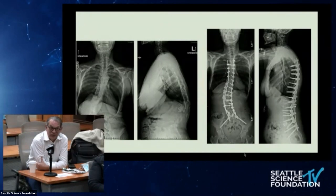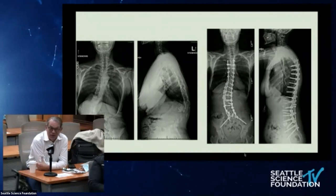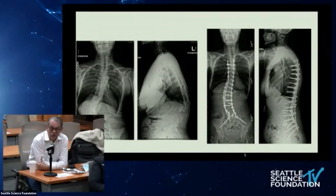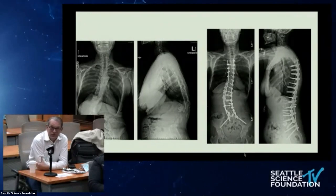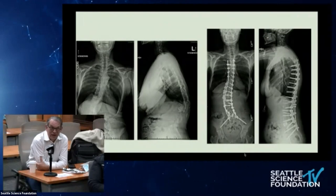Schwab notes mechanical work shows that long parallel iliac screws are surprisingly stronger than convergent or divergent configurations. With four-screw iliac constructs he has not seen a single failure. He doesn't routinely use four rods for long constructs to pelvis since it's the connection not the rod that usually fails, but he does use four rods for PSOs and VCRs, and will use them for complex cases, very osteoporotic patients, or those who have previously failed pelvic screws.